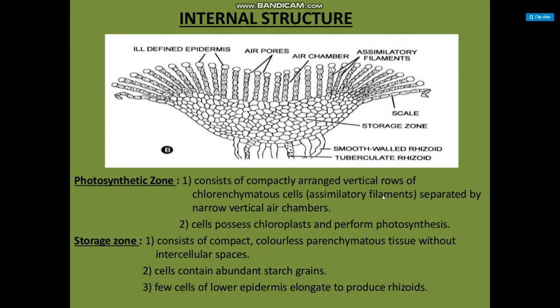Internal structure: this diagram shows the internal structure of Riccia. It is classified into two regions: photosynthetic zone and storage zone. The photosynthetic zone consists of compactly arranged vertical rows of chlorenchyma cells, forming assimilatory filaments separated by narrow vertical air chambers; these cells possess chloroplasts and perform photosynthesis. The storage zone consists of compact, colorless parenchymatous tissue without intercellular spaces; cells contain abundant starch grains. A few cells of the lower epidermis elongate to produce rhizoids.